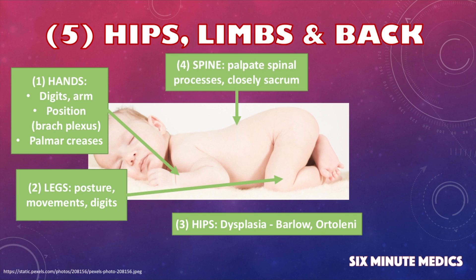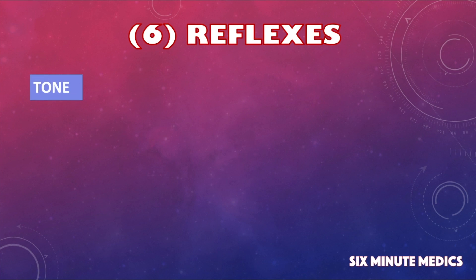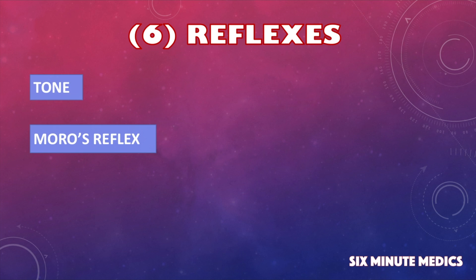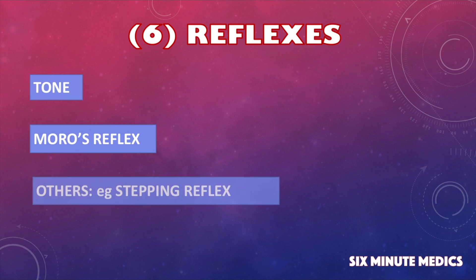Turn the baby over in your hand and have a look at their spine, particularly looking at the curvature. Closely focus on the sacrum to exclude the possibility of spina bifida. A brief neurological assessment is also important — assess tone while you're handling the baby and check their Moro reflex, looking to see that the response is symmetrical. It is important that you warn the parents before you perform the Moro test as it may cause a bit of a fright.